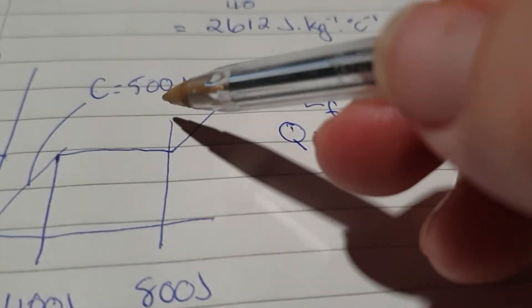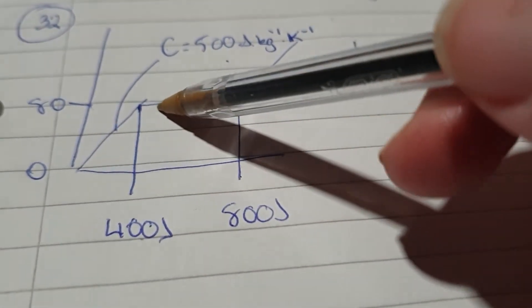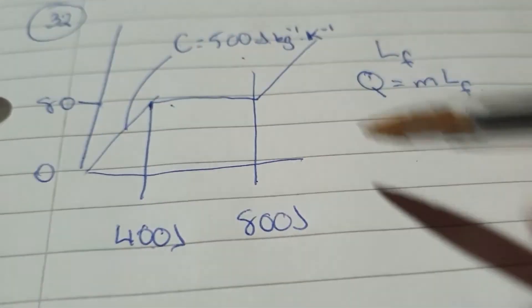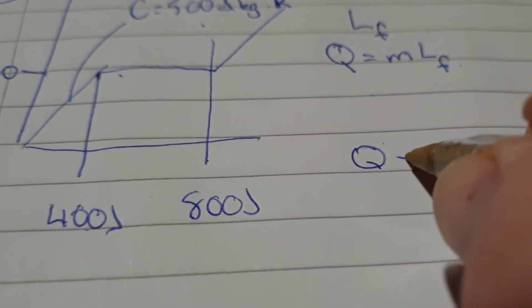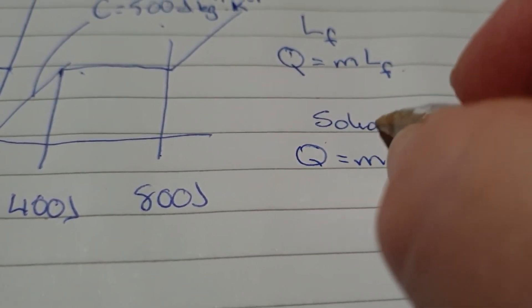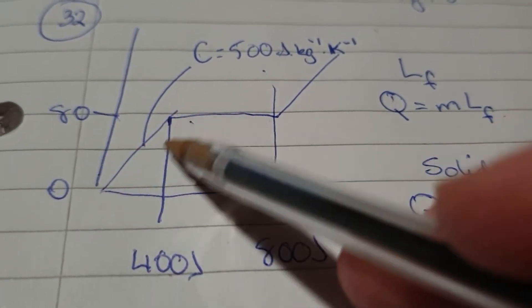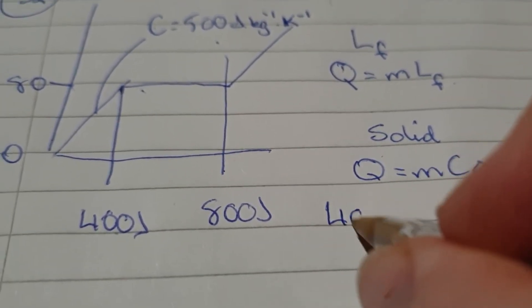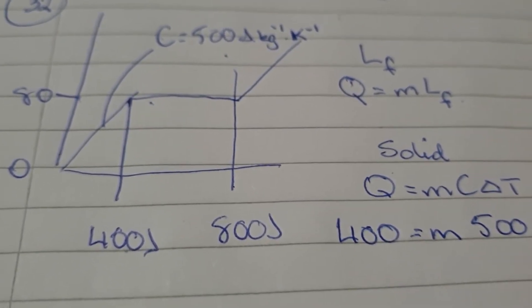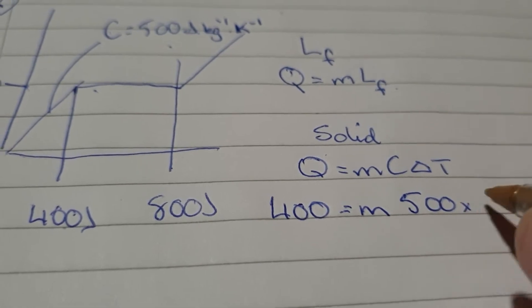So, it did give me this extra bit of information here. And I can work out Q off the graph. And I can work out a temperature change. So, I could work out the mass from this solid stage here. So, if I use Q equals MC delta T for when it was a solid. I can see from the graph that 400 joules of energy was added. The mass we're looking for, it told us the specific heat capacity was 500. And the change in temperature, well, it went from 0 to 80. So, times 80.